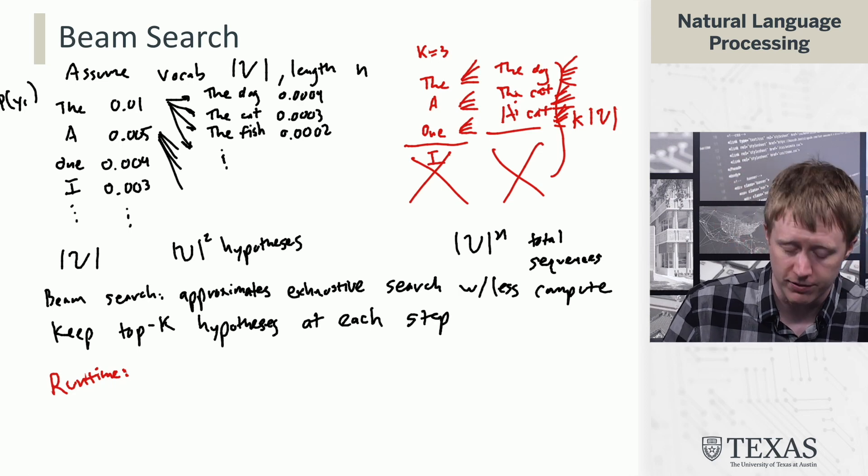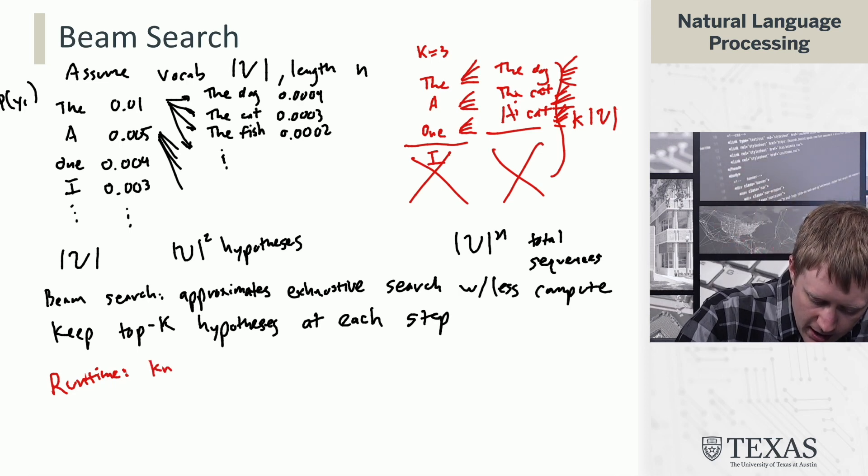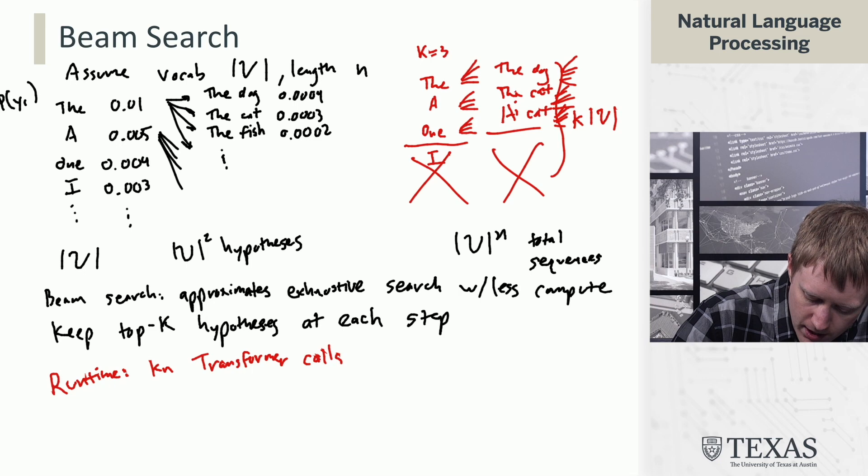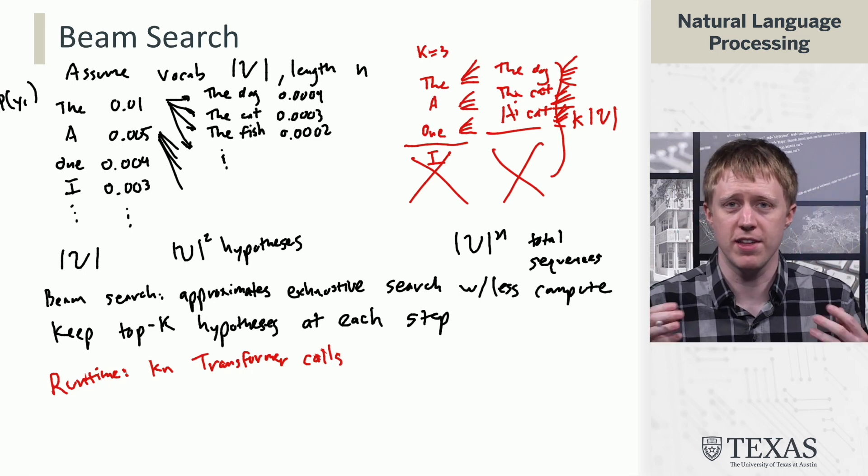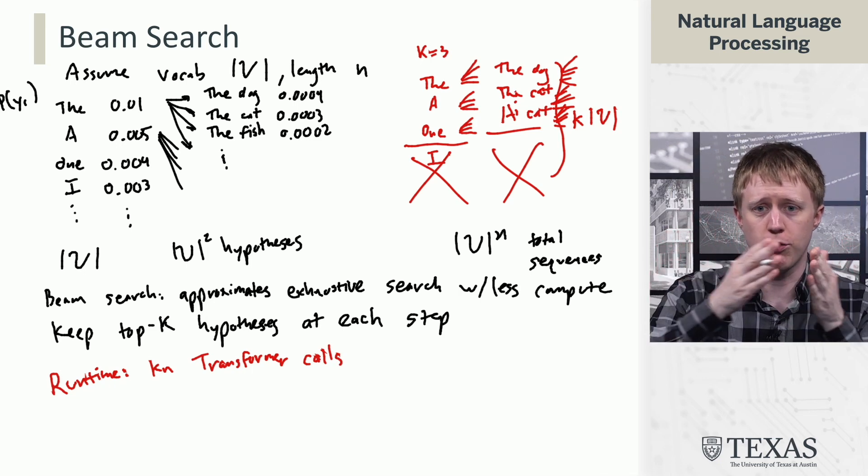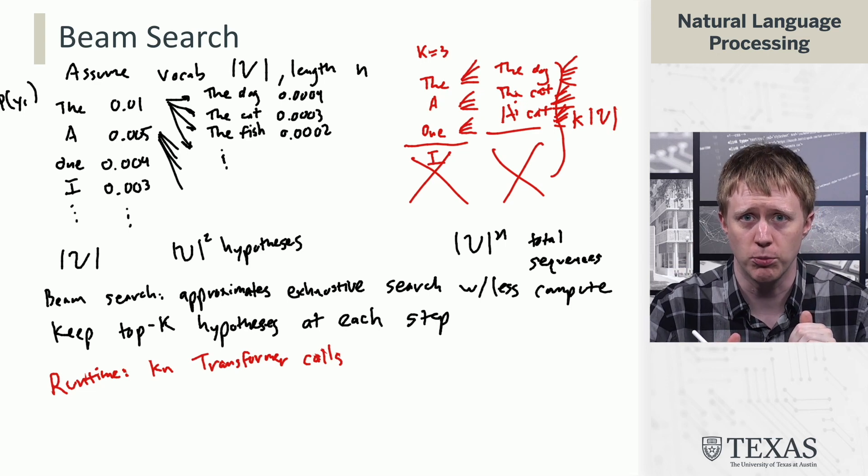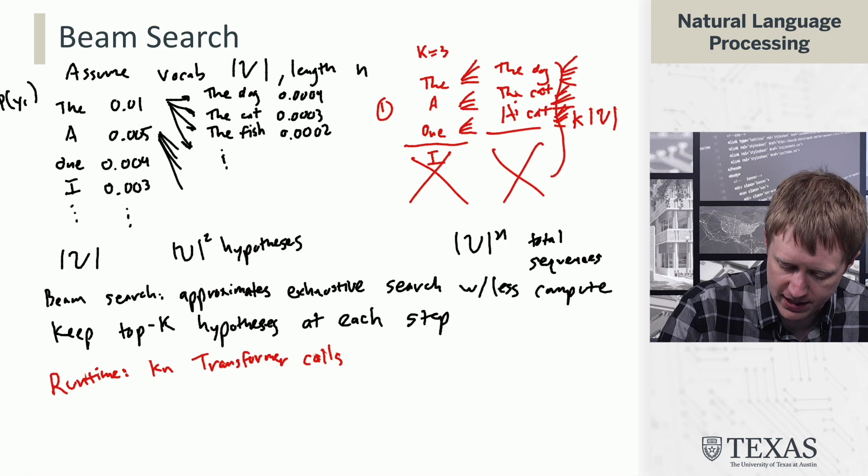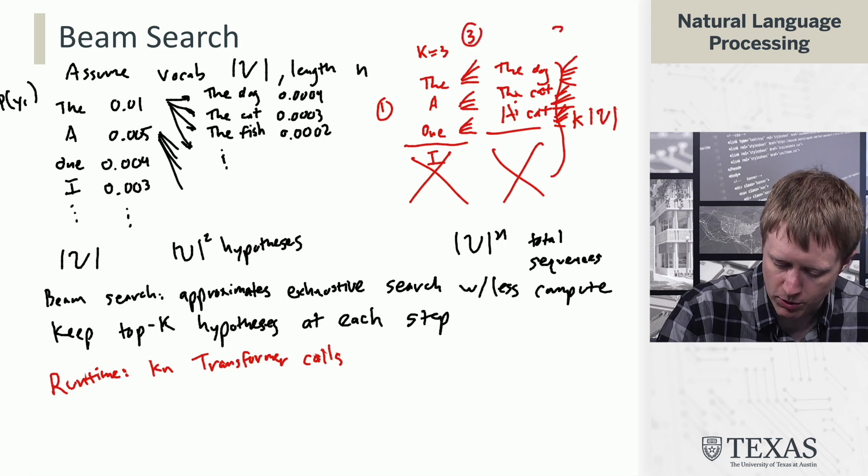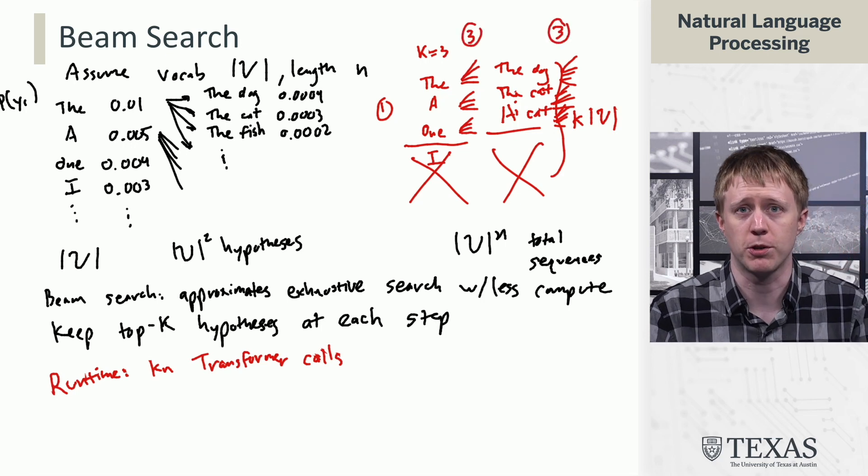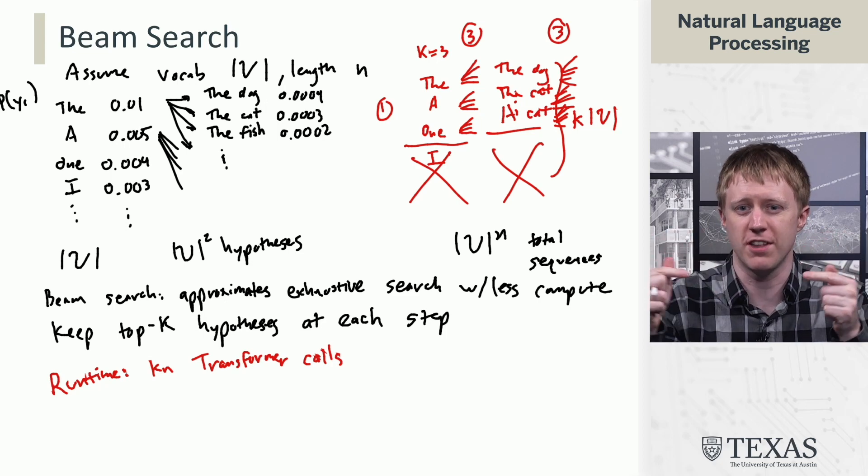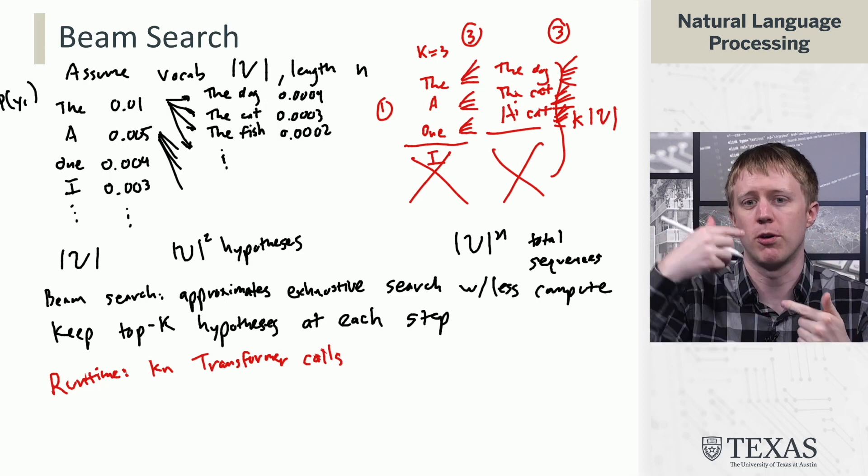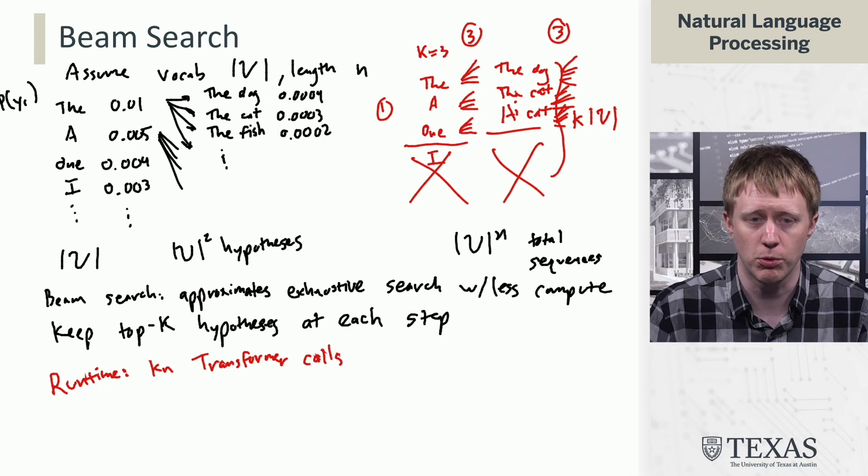Instead, the relevant things are that we're going to have k times n transformer calls in the sense that we think about how many times do we need to run the transformer and get a distribution over the next words. Well, it happens once at the first time step, and then it happens k times for each subsequent time step because you need to consider each of the things in your beam, run the transformer over it, get the distribution over the next words.